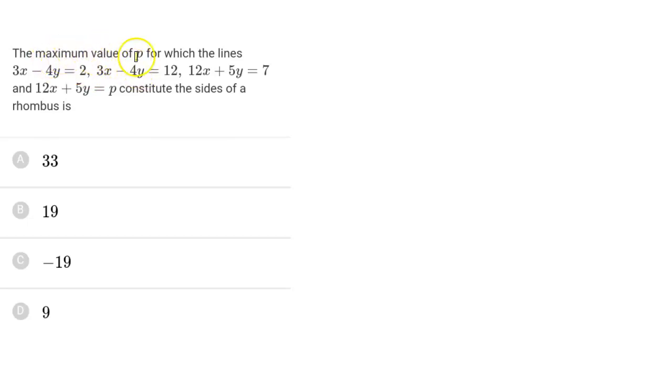Hello everyone. We have a question. Find the maximum value of p for which the lines 3x - 4y = 2, 3x - 4y = 12, 12x + 5y = 7, and 12x + 5y = p constitute the sides of a rhombus.